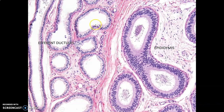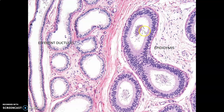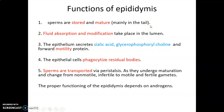So this is how the epididymis looks like — pseudostratified columnar epithelium with stereocilia, and smooth muscle cells around it. All these are cross-sections; remember it's a highly coiled gland. So when you cut through, these are cross-sections from the epididymis showing pseudostratified columnar epithelium with stereocilia.